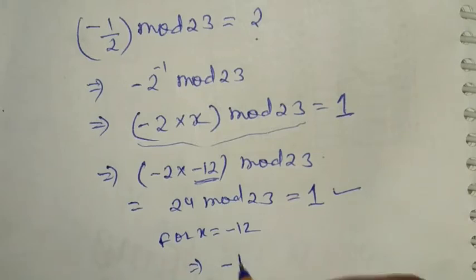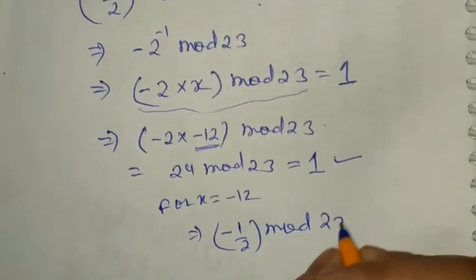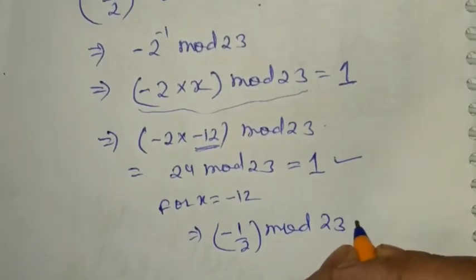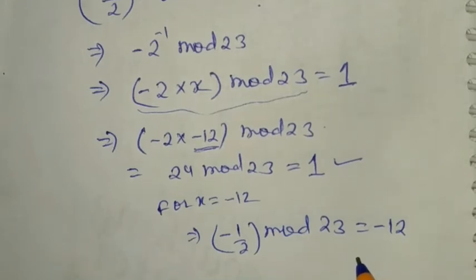Minus 1 by 2 mod 23 is minus 12, which can be written as: